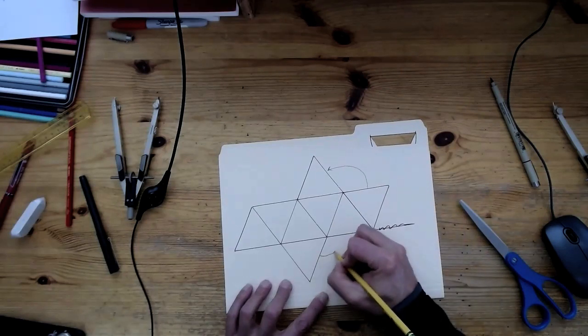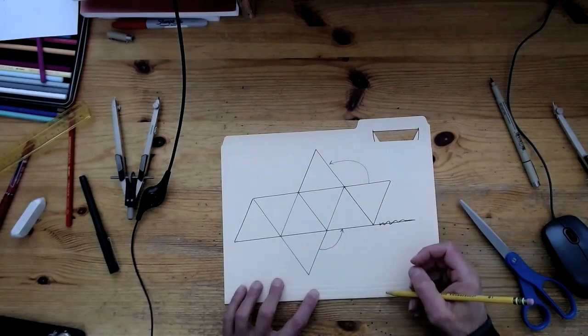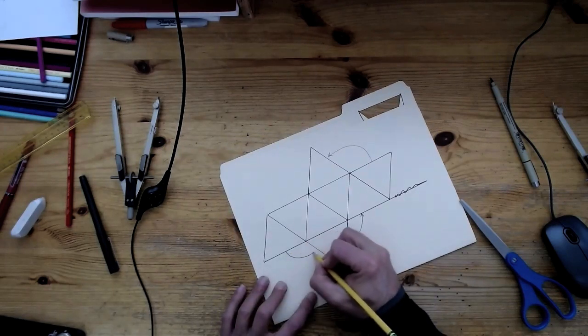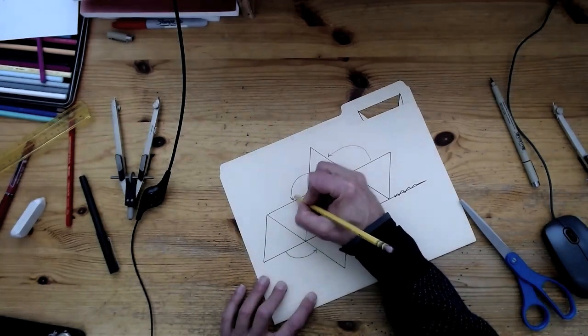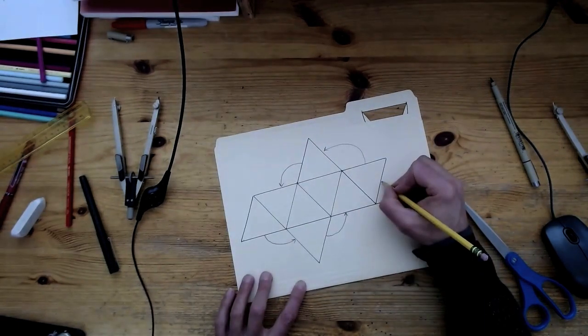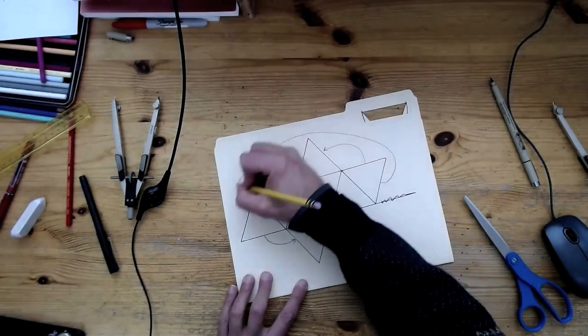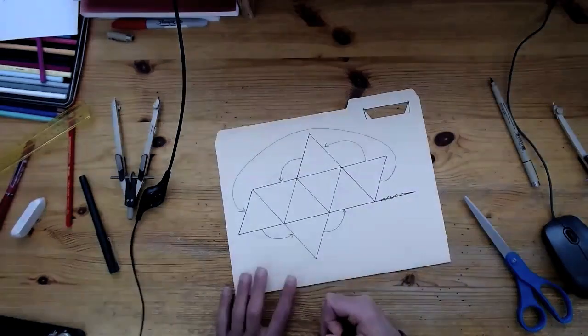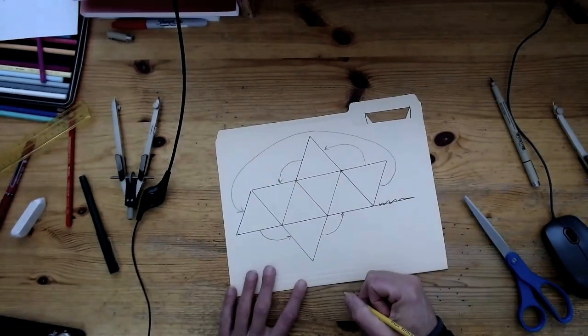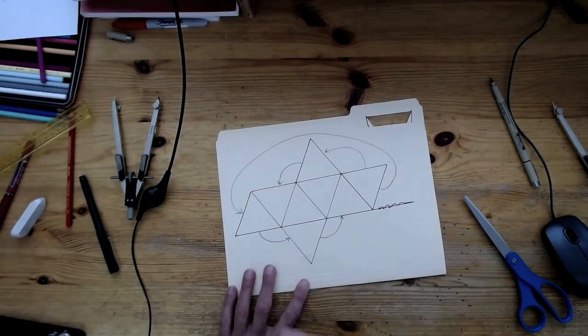This edge is going to come together with this one. If you see it correctly like this, this edge will come together with this. This edge will come together with this. And now what other edge is missing? Well, this edge here is going to come together all the way over here. This will allow me to plan where to put my tabs. By making these arrows, this is going to help a great deal. Every place where two edges come together, there needs to be one tab.